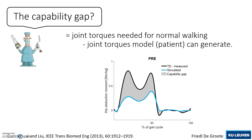Based on this model, we computed the capability gap, which is the difference between the joint torques needed for normal walking and the joint torques the patient can generate.